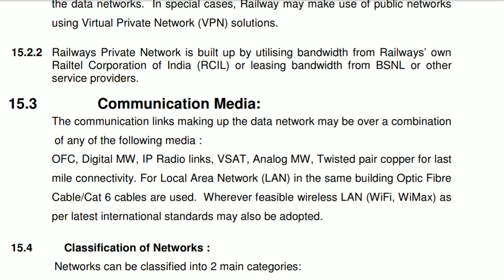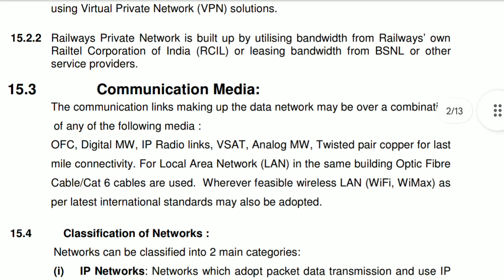OFC, digital microwave, IP radio links, V-SAT, analog microwave, twisted pair copper for last mile connectivity, LAN in the same building — fiber optic cable and Cat6 cable. These are the communication media used in railway.